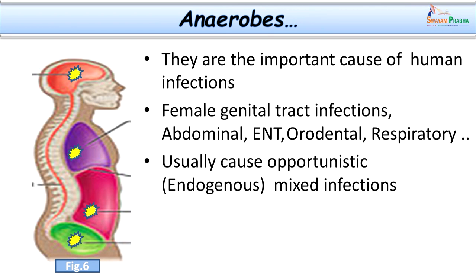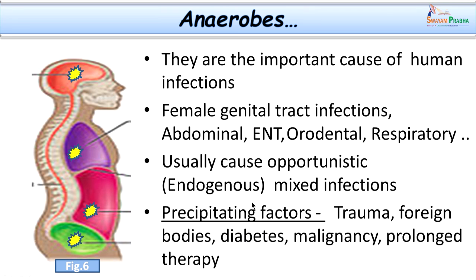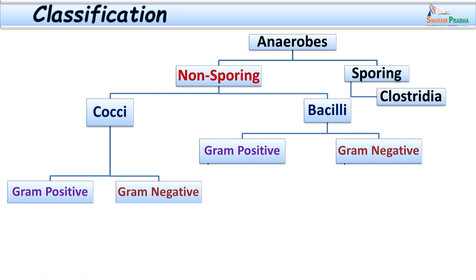Anaerobes can cause chronic pharyngitis, ear, nose, and throat infections, orodental infections, neck space infections, respiratory infections, and lung abscesses. They cause opportunistic infections when immunity is reduced, and are usually mixed infections in nature. Precipitating and predisposing factors include trauma — especially with lodgement of a foreign body, which compromises blood supply — as well as diabetes, malignancy, and prolonged antibiotic therapy.